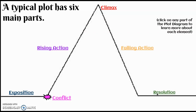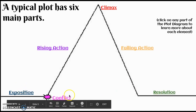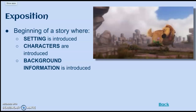A typical plot has six main parts: the exposition, the conflict, the rising action, climax, falling action, and resolution. We are going to start with exposition. Simply put, the exposition is the beginning of a story, and in the beginning you need to set up what's going on so that your audience understands the setting, the characters who's involved, and the background information that's necessary.